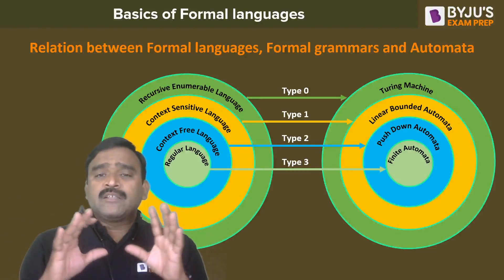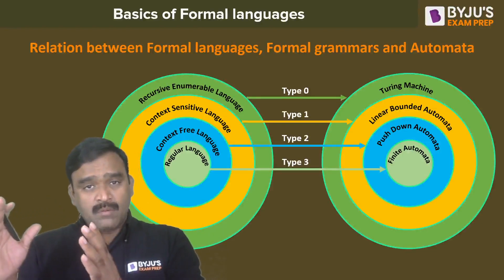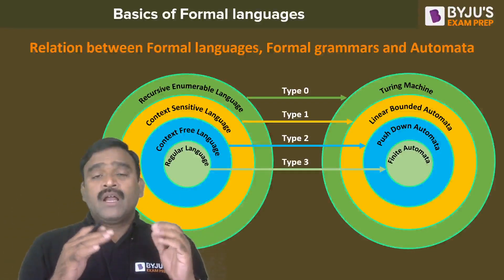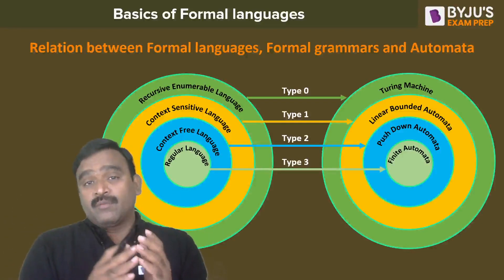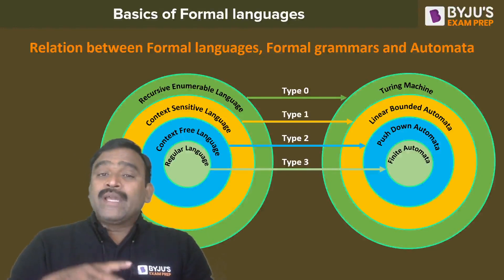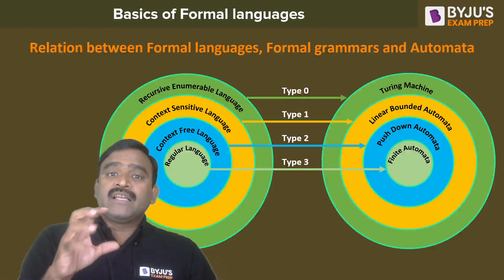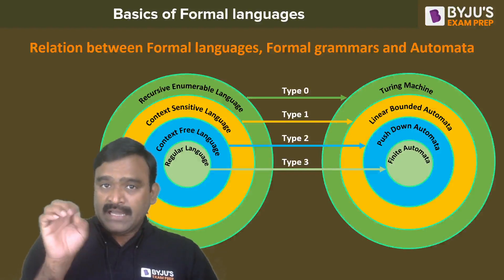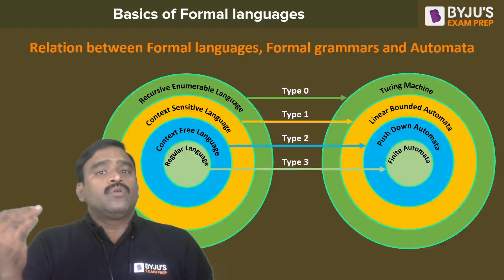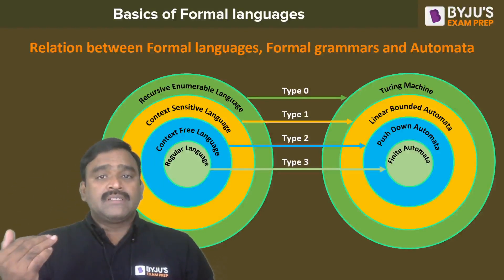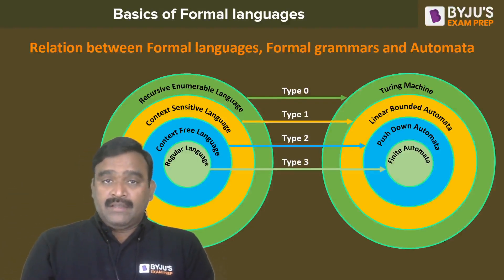This subject is about how to construct a machine counterpart for formal languages and how to construct a grammar for them — so you can understand the recognizing capability and categories of languages. Using this, we can define programming languages and design compilers for them.